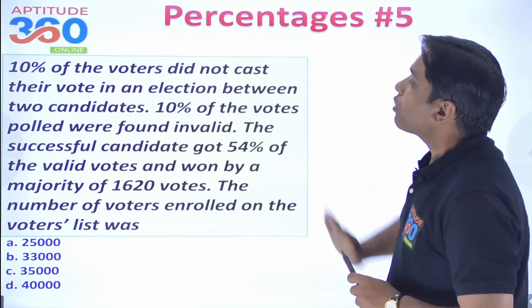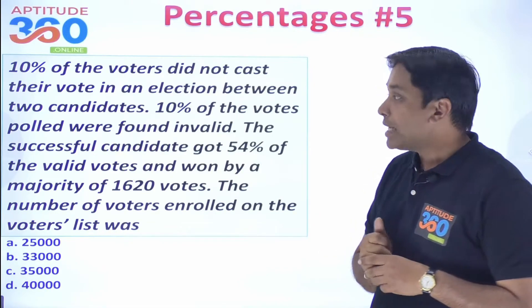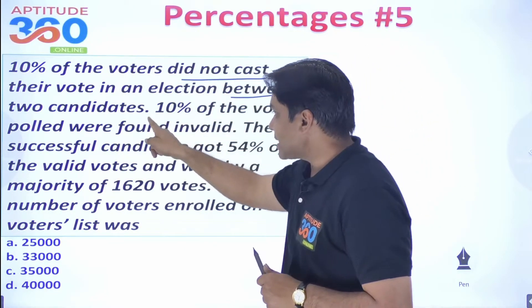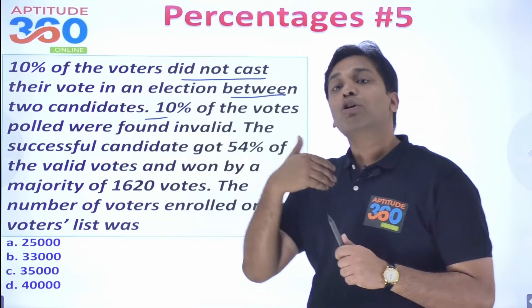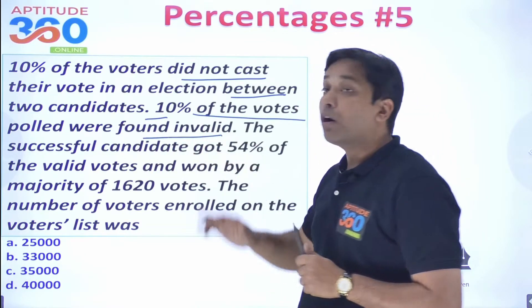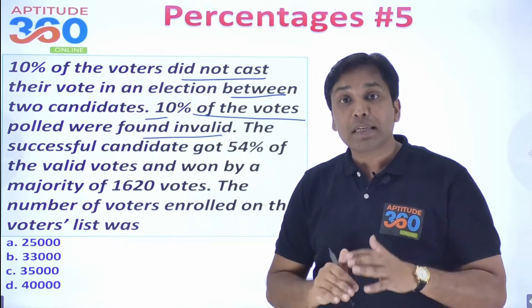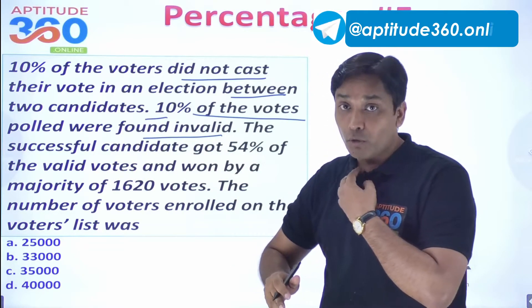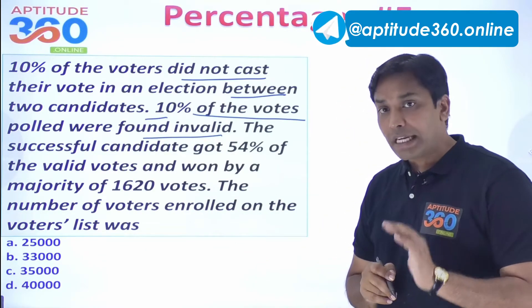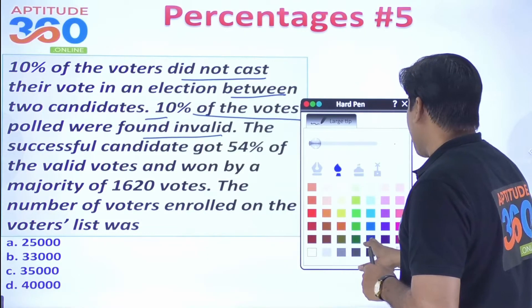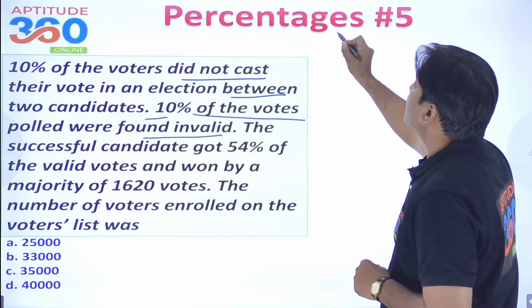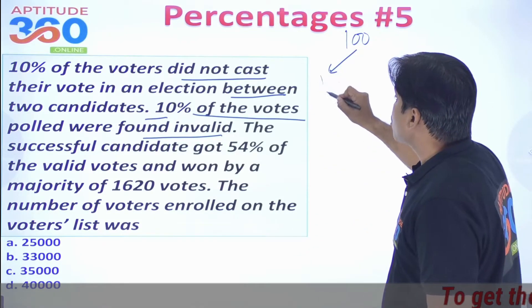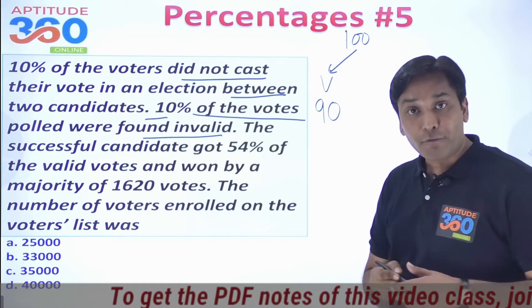The last election problem: 10% of voters did not cast their votes, and 10% of the votes that were polled were invalid. The successful candidate got 54% of the valid votes. We take 100 total voters. 10% did not vote, so 90 people voted.